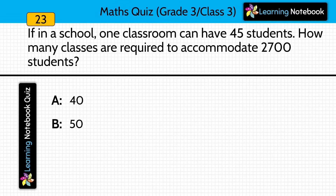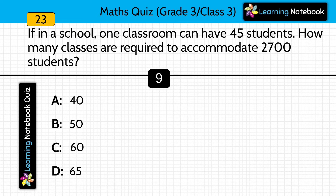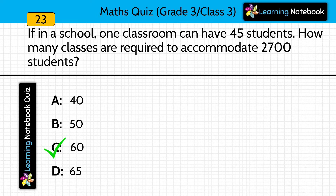Question twenty-two: if one classroom can have 45 students, how many classes are required to accommodate 2,700 students? Answer is 60. Divide 2,700 by 45 and you get the answer as 60.